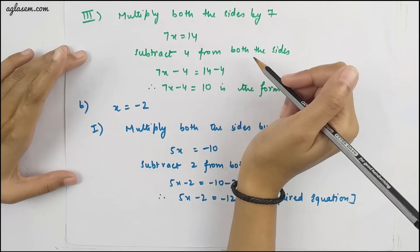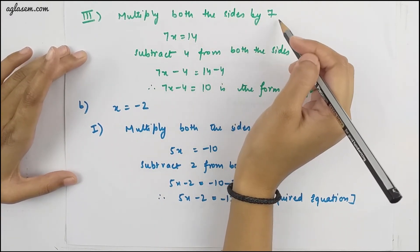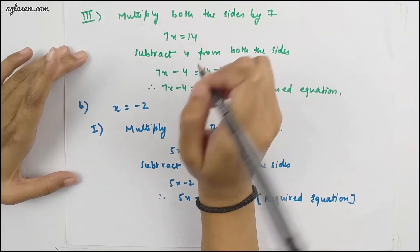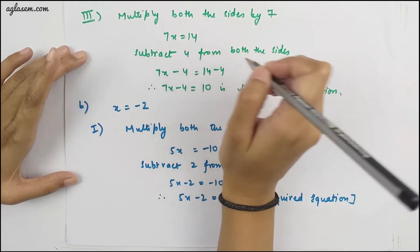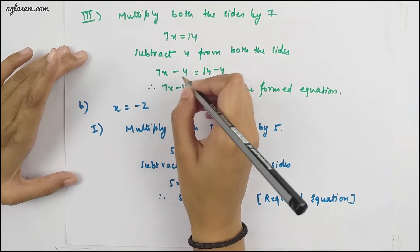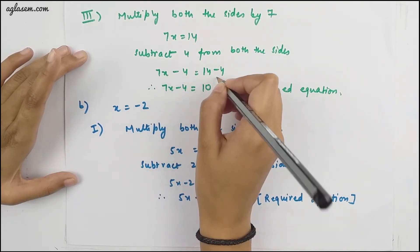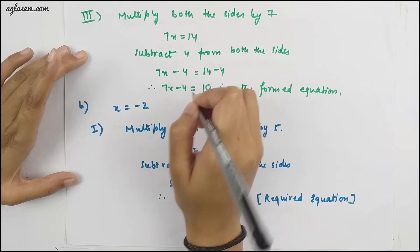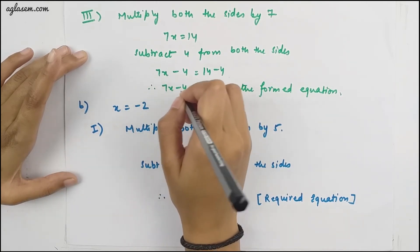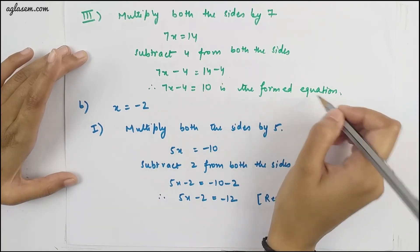Third equation: multiply both sides by 7, giving 7x = 14. Subtract 4 from both sides: 7x − 4 = 14 − 4. From there, the equation 7x − 4 = 10 is formed.